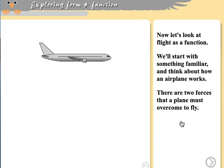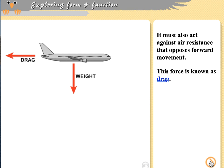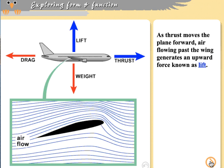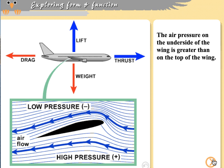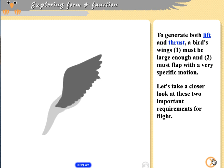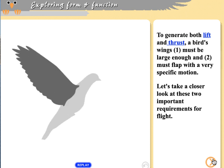Let's look at what flight is and the forces associated with it. For a plane to fly, it must overcome its weight and drag, generate thrust, and develop lift. These same forces apply to birds. Air flowing over a wing creates low pressure over the top and high pressure below, causing upward lift. But birds aren't airplanes — there's no engine. The wings must generate both lift and thrust through their flapping motion.